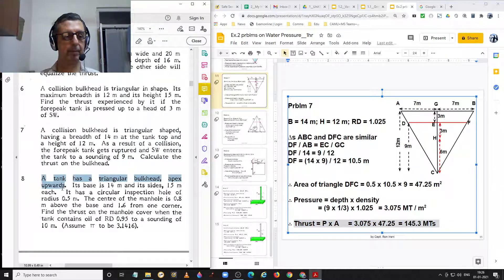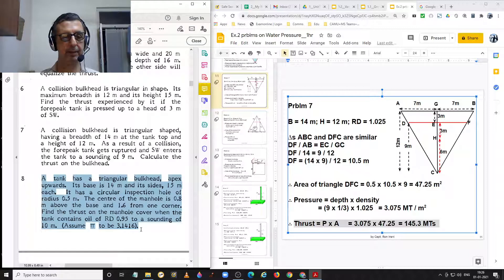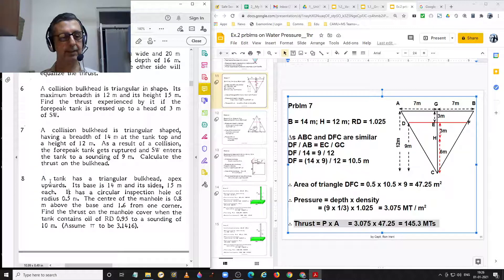Going on to problem number 8. A tank has a triangular bulkhead, apex upwards. Its base is 14 meters. Now, just before we continue any further, what does it tell us? A tank has a triangular bulkhead with its apex upwards.